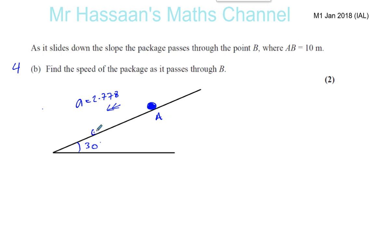So let's say this is the point B and the package is now here. The distance between A and B is 10 meters. We know that the initial velocity at A is zero, initial speed at A is zero, and we've got to find the final speed.